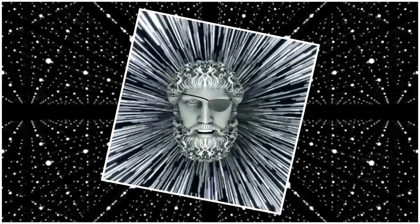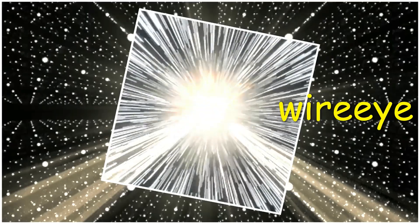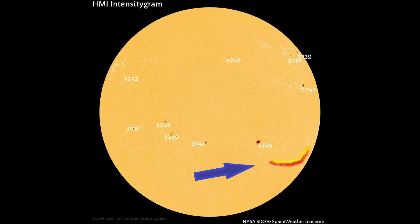Welcome. Shall we observe the sun? Starting off with this HMI intensity gram map, showing the sunspots on the earth-facing side of the sun today. At the lower right of sunspot region 3245, a filament just detached from the sun.